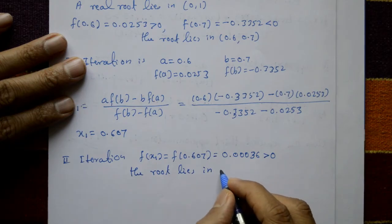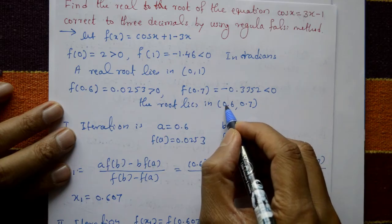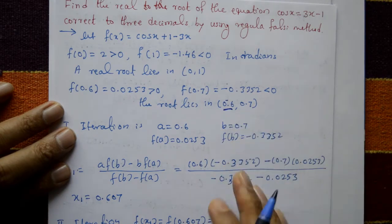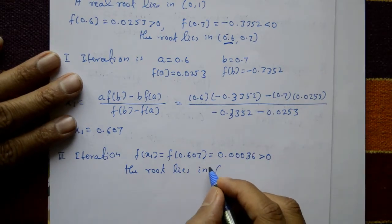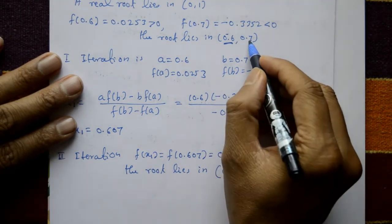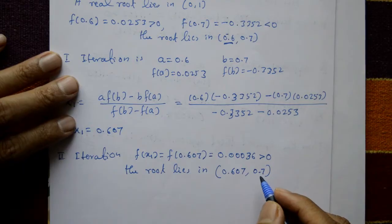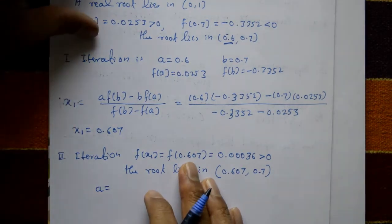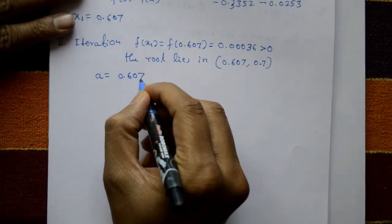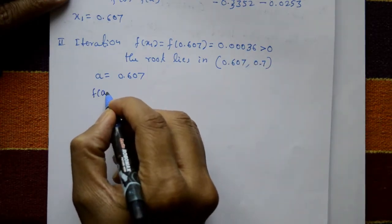Since f(0.607) is positive and f(0.7) is negative, we update the interval: replace a with 0.607 and keep b = 0.7 unchanged.